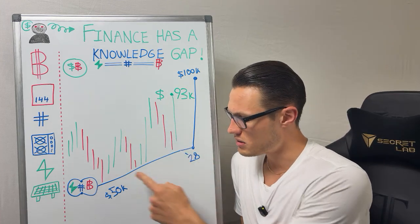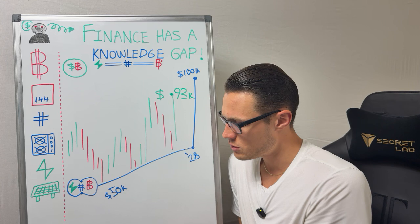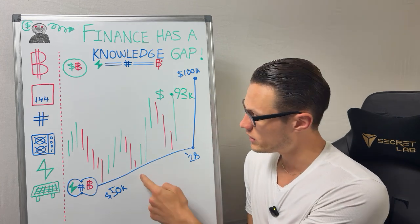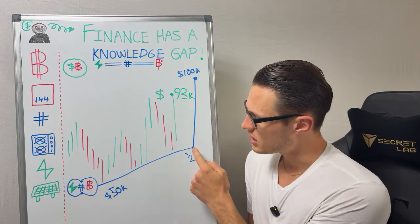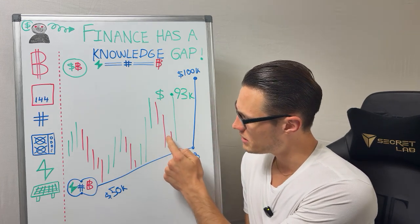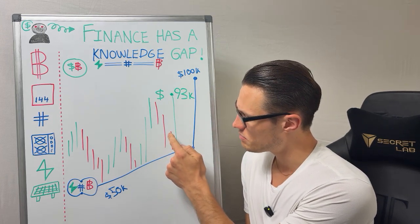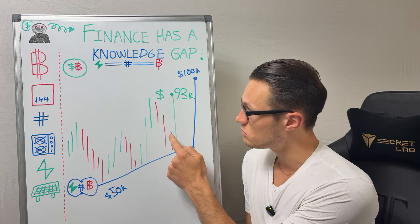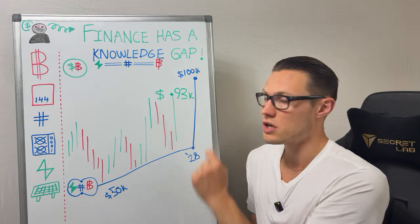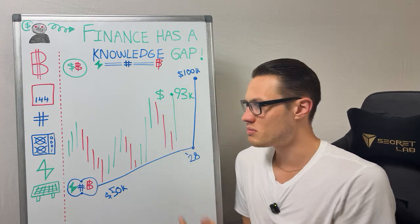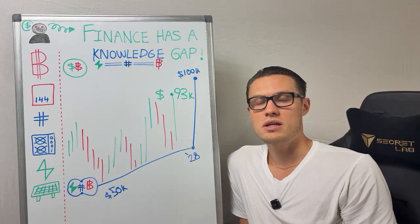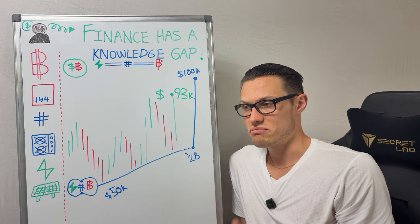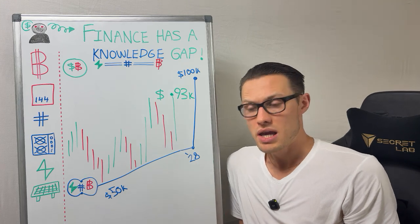But if the price goes below production, or we know that this event is coming, and you can buy Bitcoin at a lower price today than what your future production cost will be, it's a no-brainer to buy it before that trend occurs.